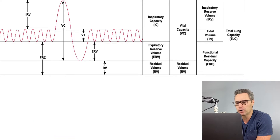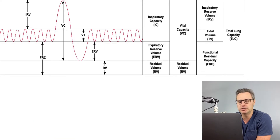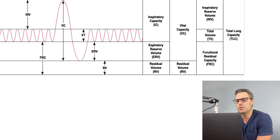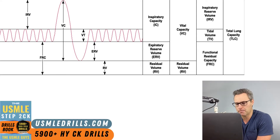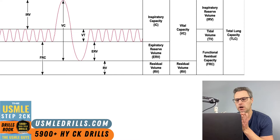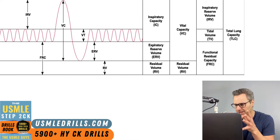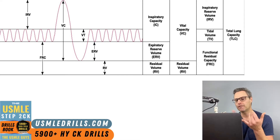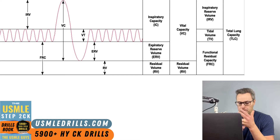This is all a step one review. If you need a deeper review and you're just not remembering this stuff, go back and check out your step one info. To begin with, we have the total lung capacity. Remember, this is the total volume of the lungs when they're maximally inflated. Total lung capacity is equal to vital capacity plus residual volume.